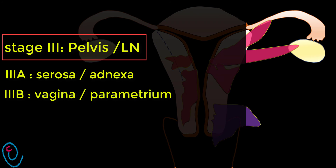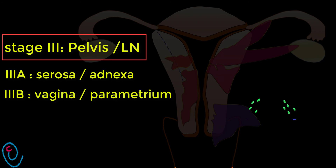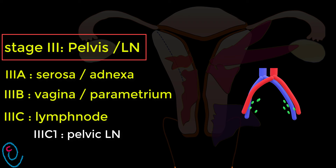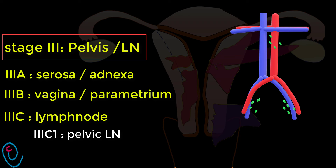Stage 3C includes lymph node metastases: pelvic lymph node involvement is classified as 3C1, and para-aortic lymph node involvement is classified as 3C2.